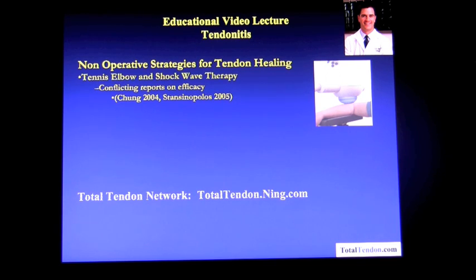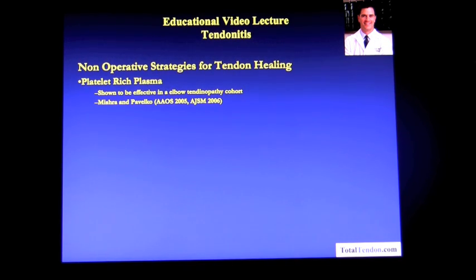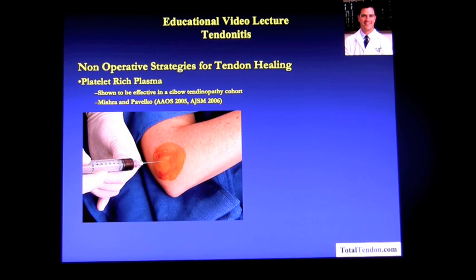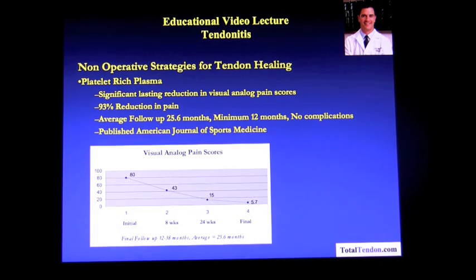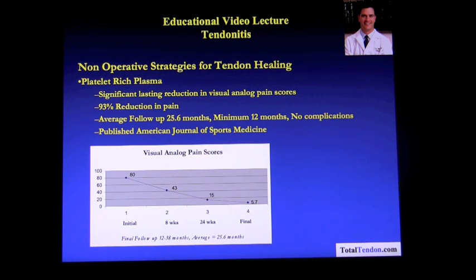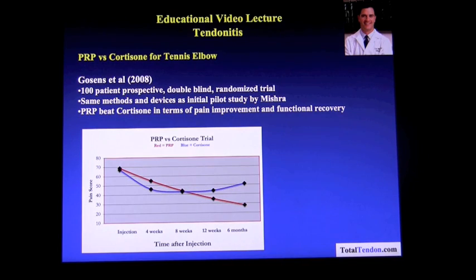Emerging treatment options include extracorporeal shockwave, and you can discuss more about this at the Total Tendon Network at totaltendon.ning.com. Emerging biologic treatment options include platelet-rich plasma, which has been shown to be effective in a cohort published in the American Journal of Sports Medicine, where there were significant lasting reductions in visual analog pain scores at an average follow-up of over two years with no complications. This study has been replicated by Dr. Ghosin in Europe, where he did a 100-patient prospective randomized trial using the same methods and devices as the initial pilot study by Dr. Mishra, where PRP beat cortisone in terms of pain improvement and functional recovery.